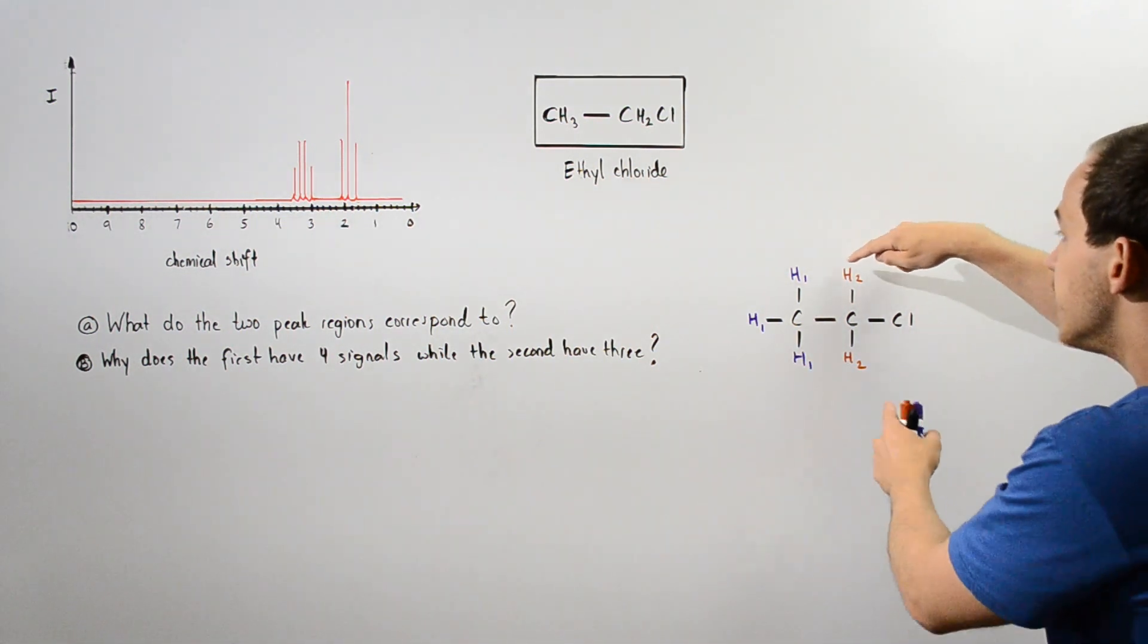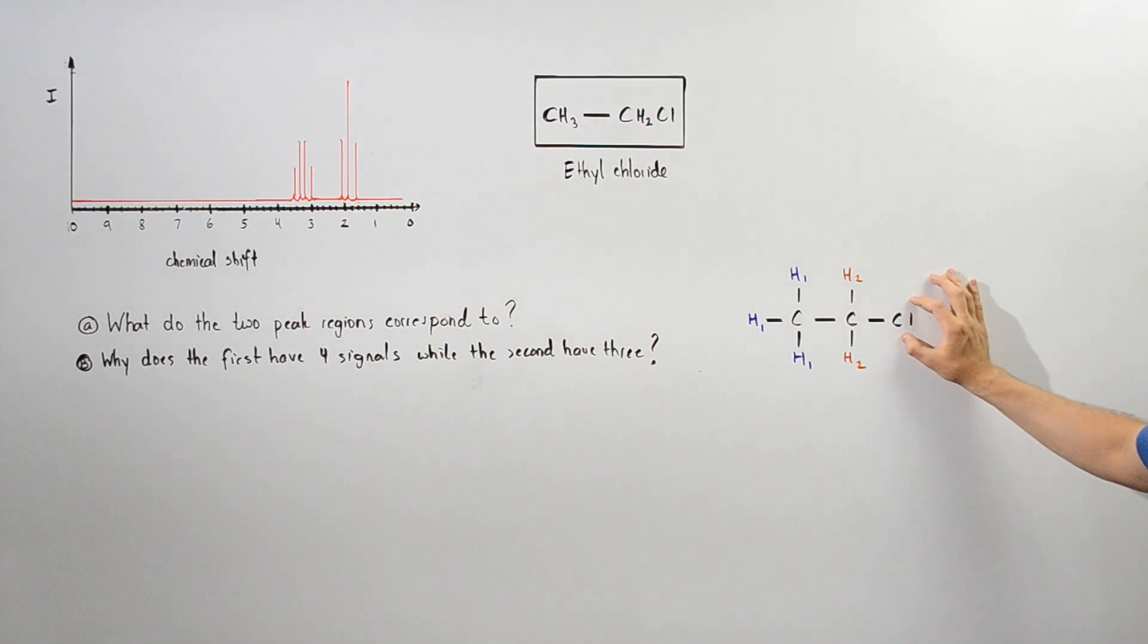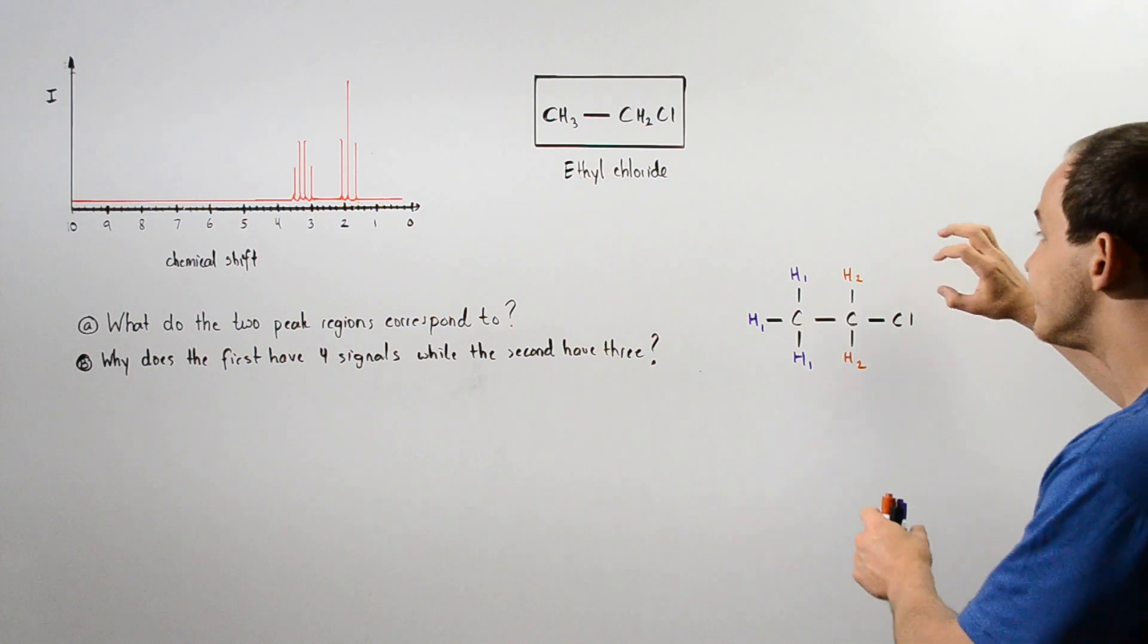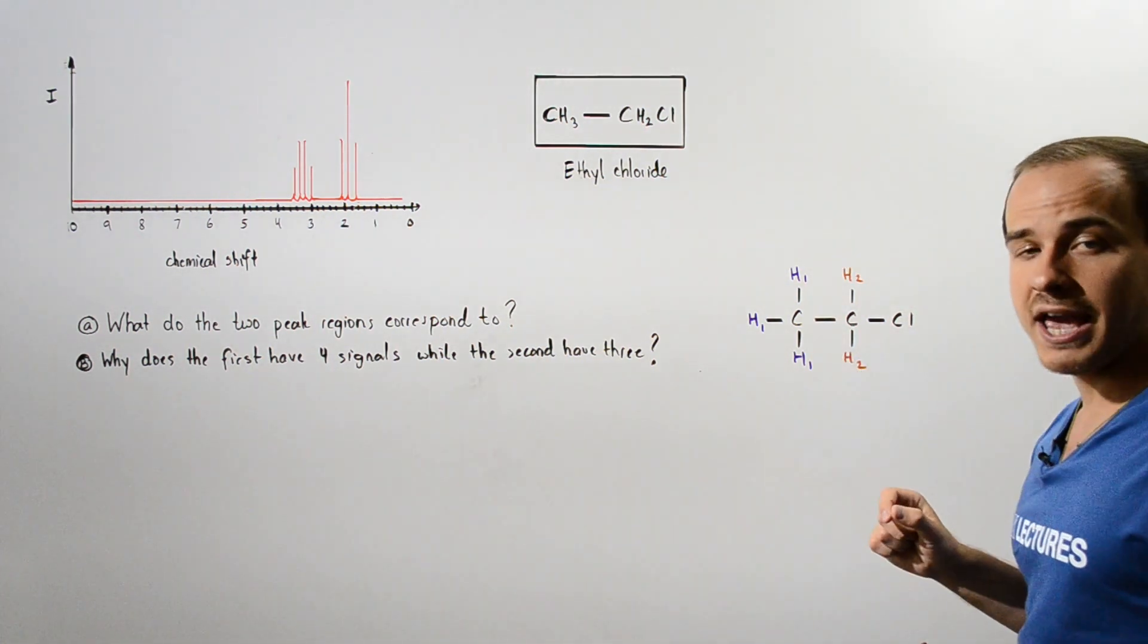On the other hand, these contain less shielding because this electronegative atom basically pulls away some of that electron density from these two H atoms, and so we have less shielding taking place.